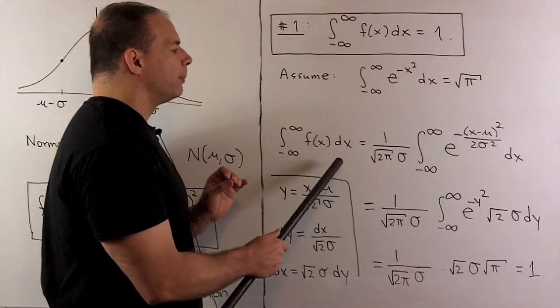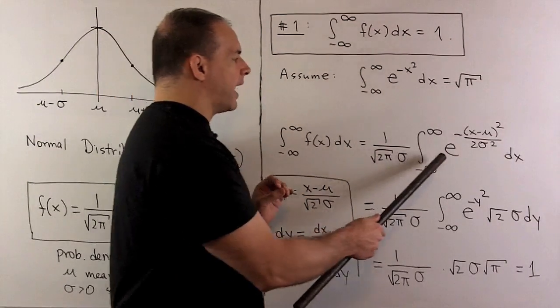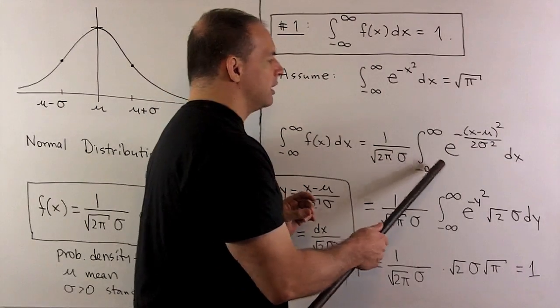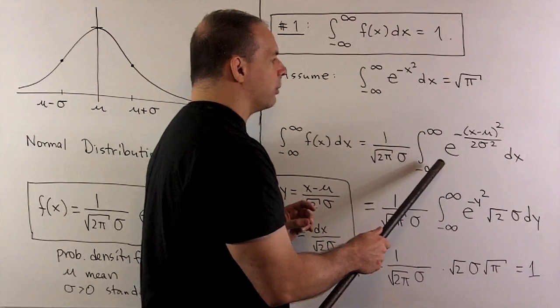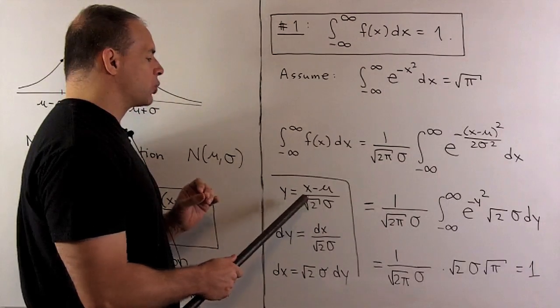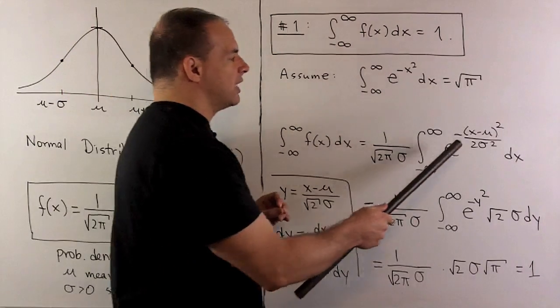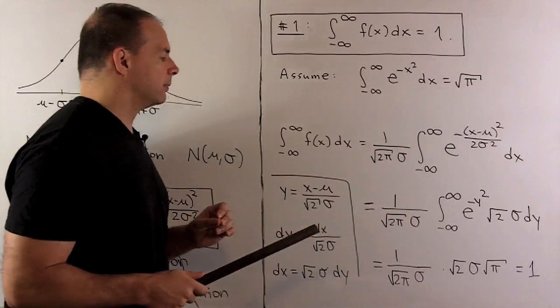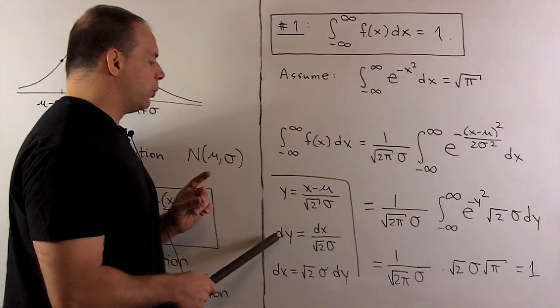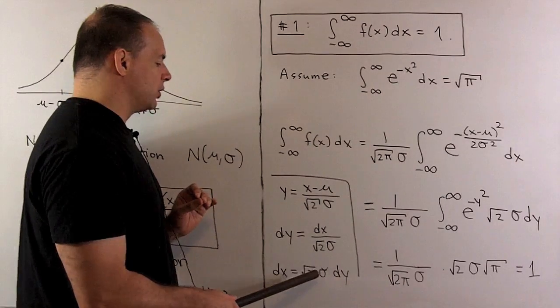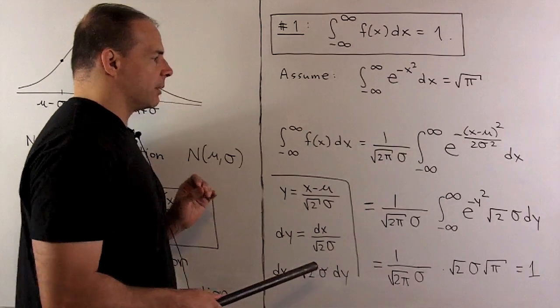So we have our integral. We put in for f(x), so I can bring out the constant. Then, to integrate this, I'm going to do a change of variable. So we're going to let y be equal to (x minus μ) over square root of 2σ. So I'm just going to take square root of the term in the exponent when we draw out the minus sign. Now, dy is equal to dx over square root of 2σ. dx equals square root of 2σ dy, and we substitute.